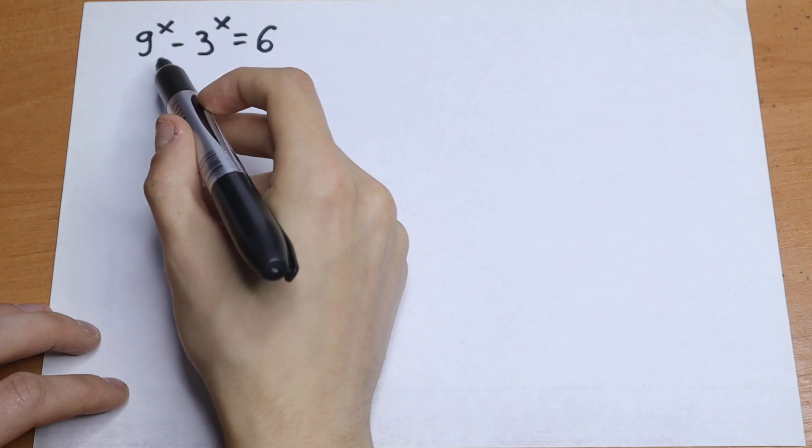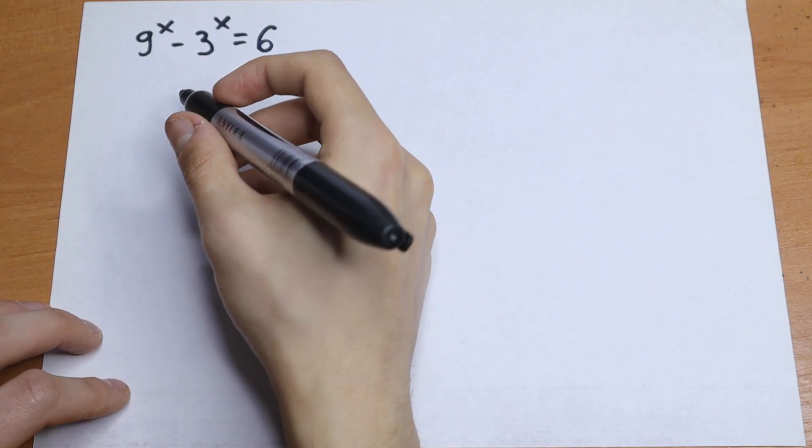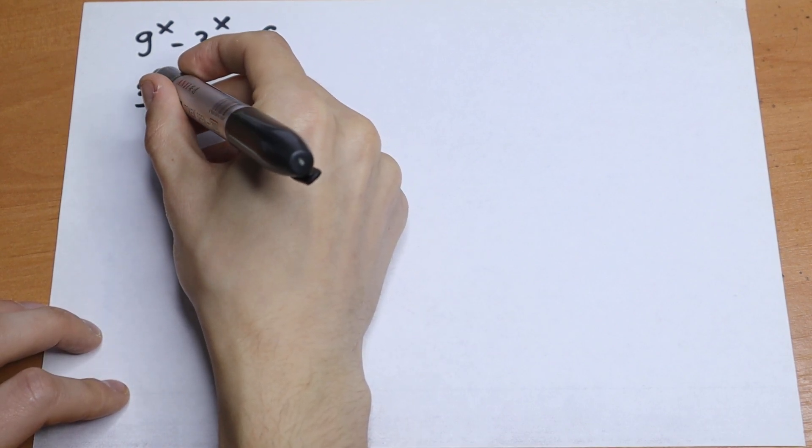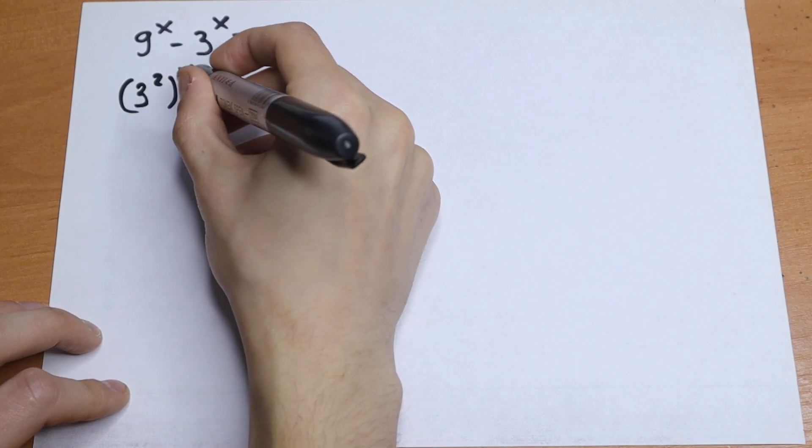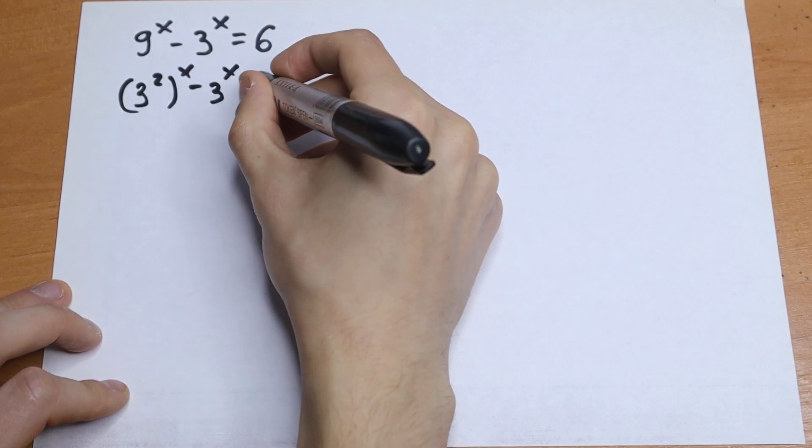We have 9 right here. We can express this 9 as 3 squared. So let's do this: 3 squared raised to the power x minus 3 to the power x equals 6.